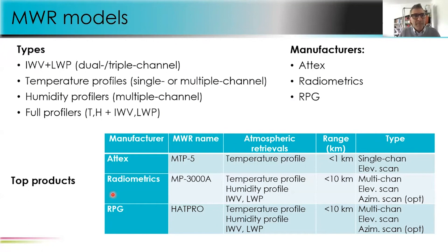The types of instruments available include dual or triple channel instruments to estimate only integrated water vapor and liquid water path, or temperature profilers, humidity profilers, or full profilers providing all products mentioned. The three manufacturers, as far as I know, are Attex, Radiometrics, and RPG. Attex offers a temperature profiler up to one kilometer, single channel with continuous elevation scanning, while both Radiometrics and RPG offer full profilers up to 10 kilometers, multiple channels, elevation scanning, and optional azimuthal scanning.